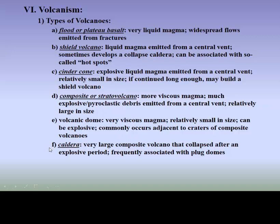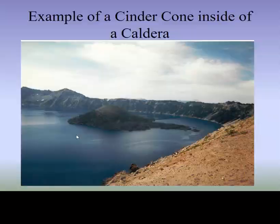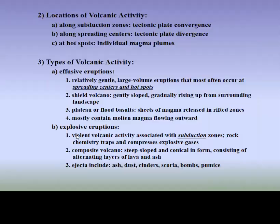We also have volcanoes — different types. I used the term caldera: a large composite volcano that has collapsed on itself. This is an example — Crater Lake in Oregon, and you can see a little volcano inside of the big volcano. This is the deepest lake in the United States at about 1,950 feet. A lot of volcanic activity occurs along subduction zones, some along spreading centers. There are volcanoes in Iceland, and volcanic activity in hot spots such as Hawaii. The ones in Hawaii are generally effusive eruptions.